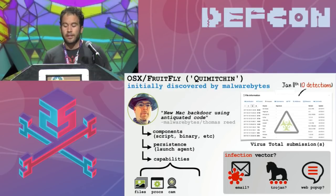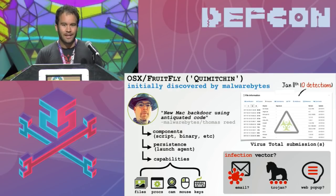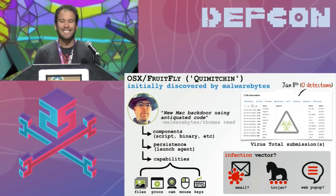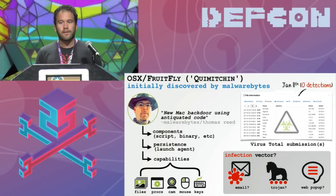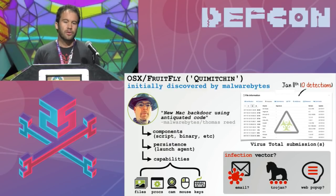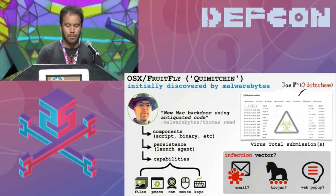Fruit Fly was discovered in January and was initially undetected by antivirus engines on VirusTotal. My good friend Thomas Reed, an incredible Mac security researcher, did the initial analysis and wrote a great blog articulating the components of the malware, its persistence techniques and some of its capabilities. It's a fairly standard but fully featured Mac backdoor with some interesting interactive capabilities, including the ability to turn on the webcam. We never found an installer — the infection vector is unknown, but perhaps it was via an email attachment or a pirated or Trojanized application.